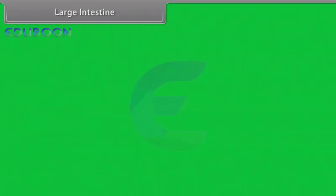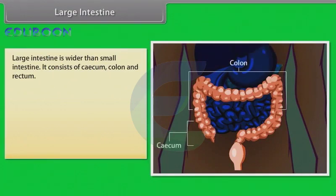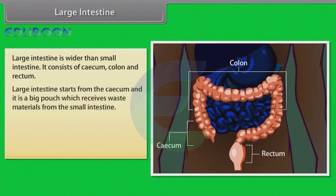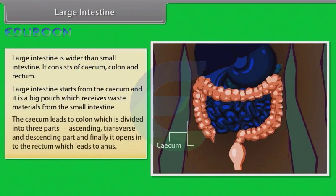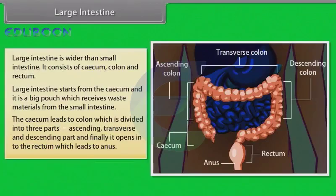The large intestine is wider than the small intestine. It consists of the caecum, colon, and rectum. The large intestine starts from the caecum, a big pouch which receives waste materials from the small intestine. The caecum leads to the colon, which is divided into three parts: ascending, transverse, and descending, and finally opens into the rectum, which leads to the anus.